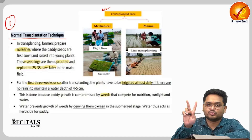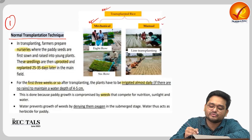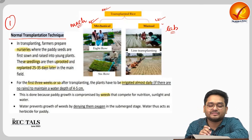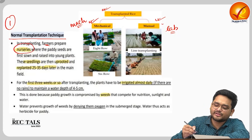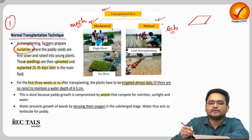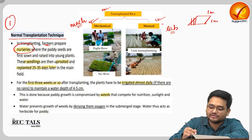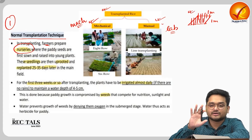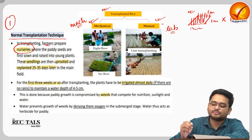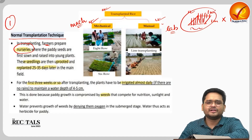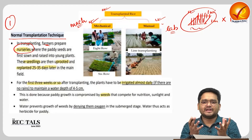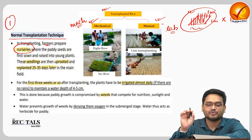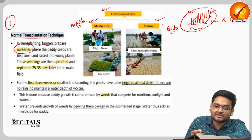Under the normal transplantation technique there are two types: mechanical, using machines, and manual, using laborers. The very first step is that farmers prepare nurseries — a small area of around one meter by one meter where rice seeds are planted and carefully tended for a period of time. This nursery is just like a school nursery where rice seeds are nurtured very carefully, just like children.